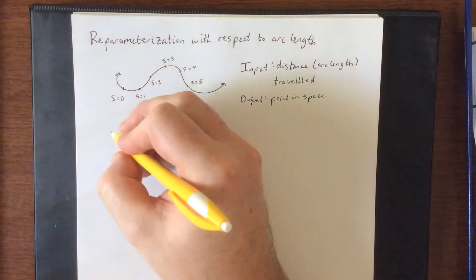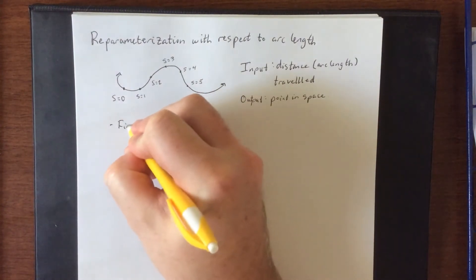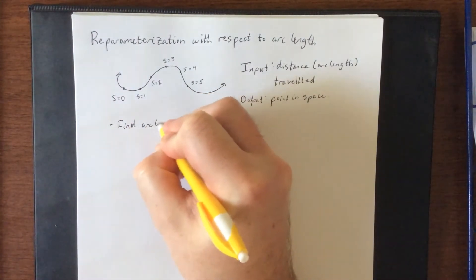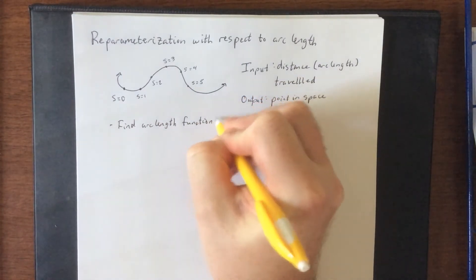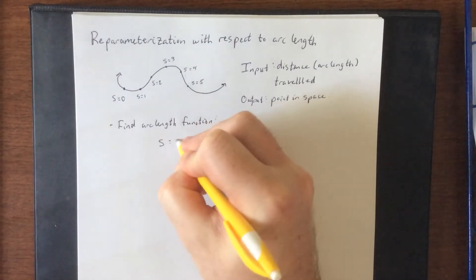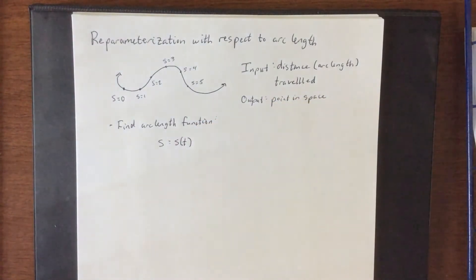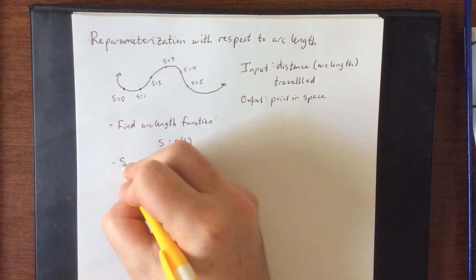So the idea is we are going to find the arc length function, which is usually s as some function of t. You saw that in the last video when we were doing the arc length function for the sine of t, cosine of t, natural log of secant of t. So here's the idea.